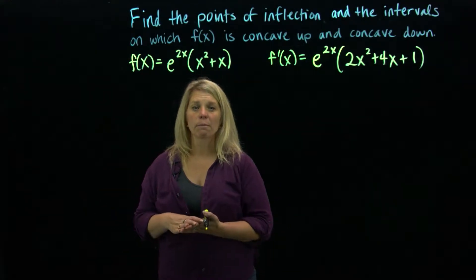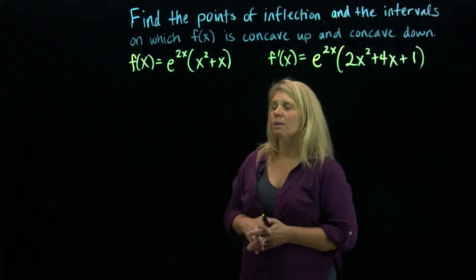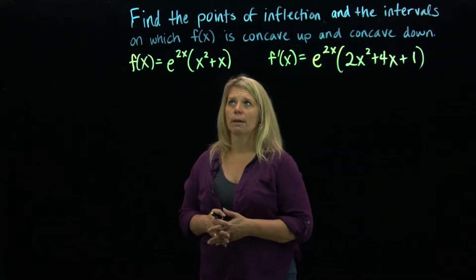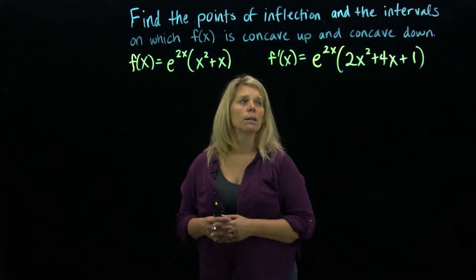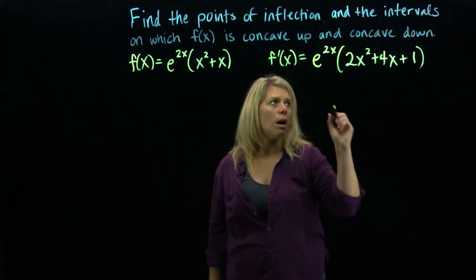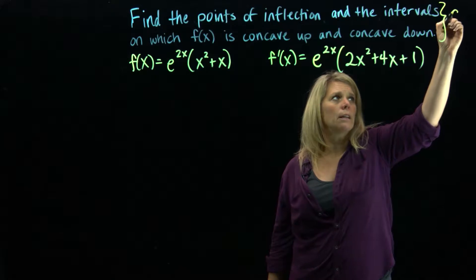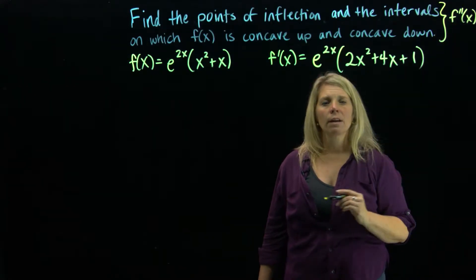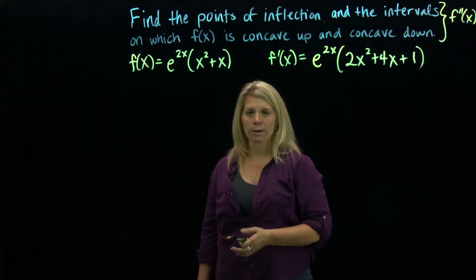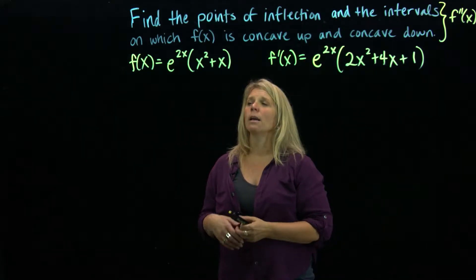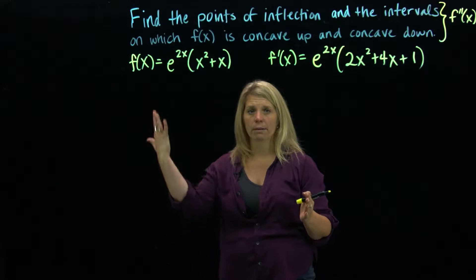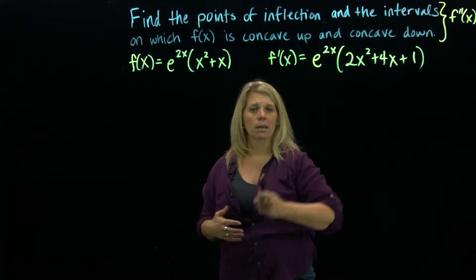We're looking at a function we've looked at before and did some work with, using the first derivative. This question asks us some different things — specifically to find points of inflection and intervals on which the function is concave up and concave down. All of that information is going to come from the second derivative. We already have the original function, found information about it, thought about the domain, found a point at the origin, and thought about limits to describe end behavior.